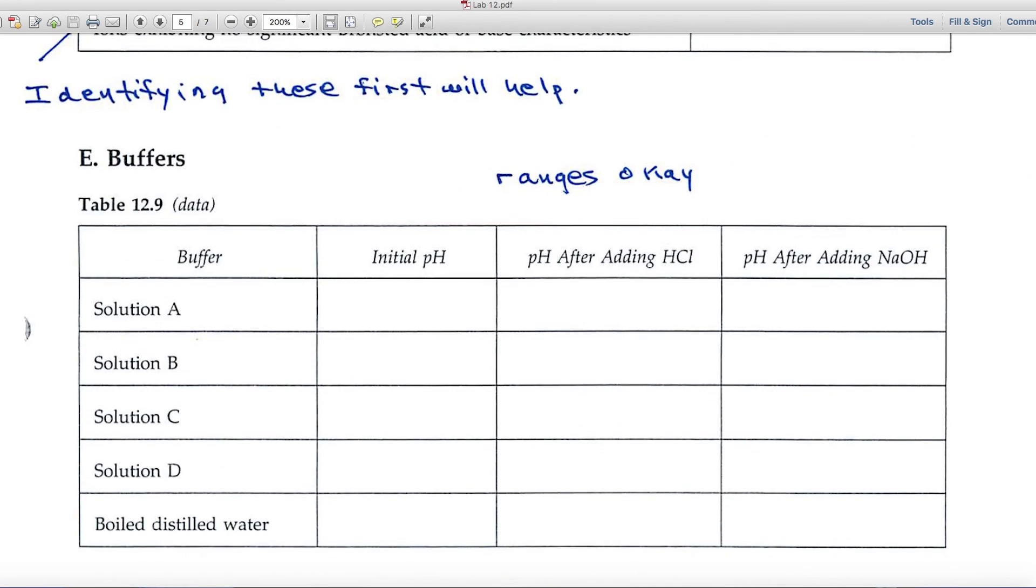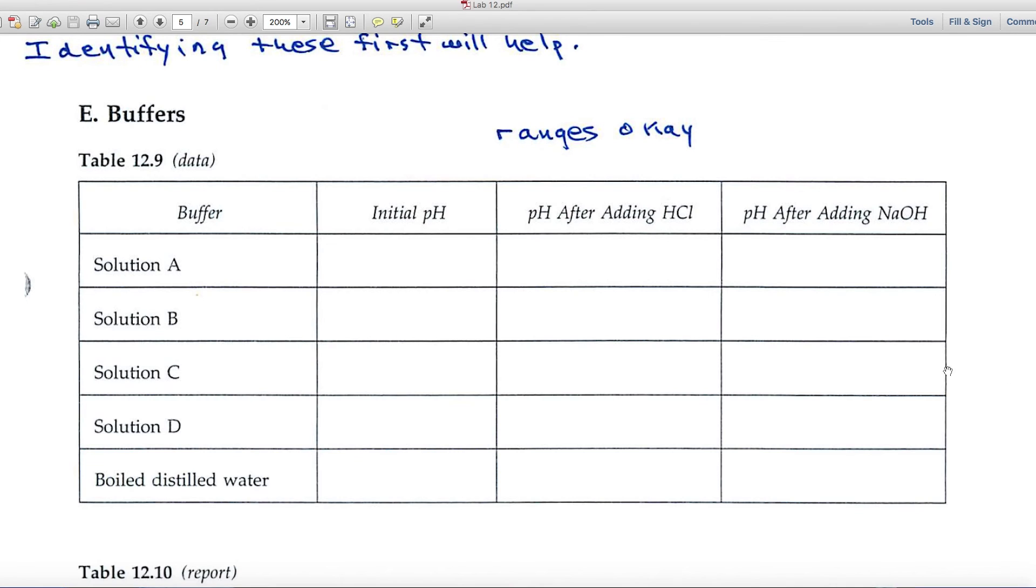Let's look at Part E. Here we're looking at buffers. Buffer, you know, is a solution that resists a change in pH. Ranges are okay. You're measuring pH values. You'll have an initial pH.